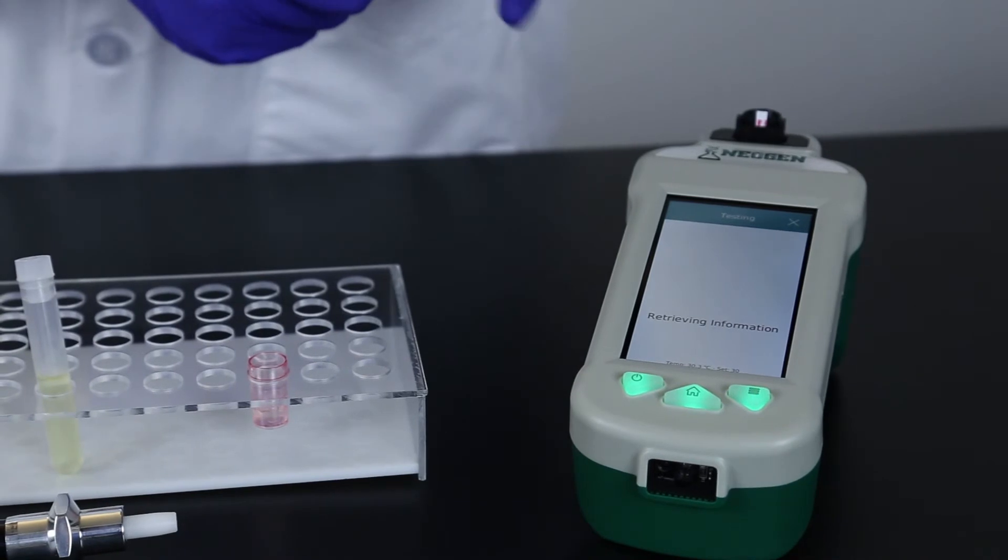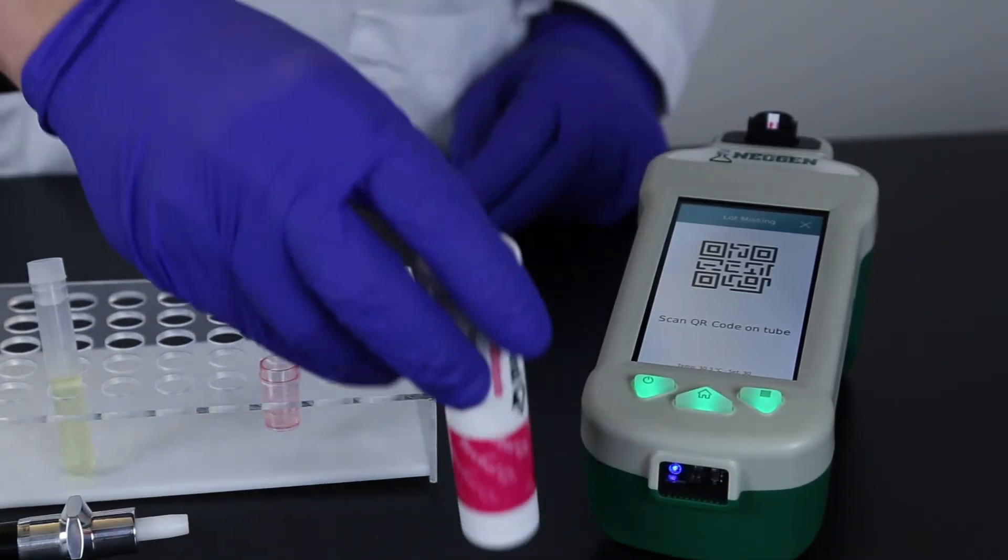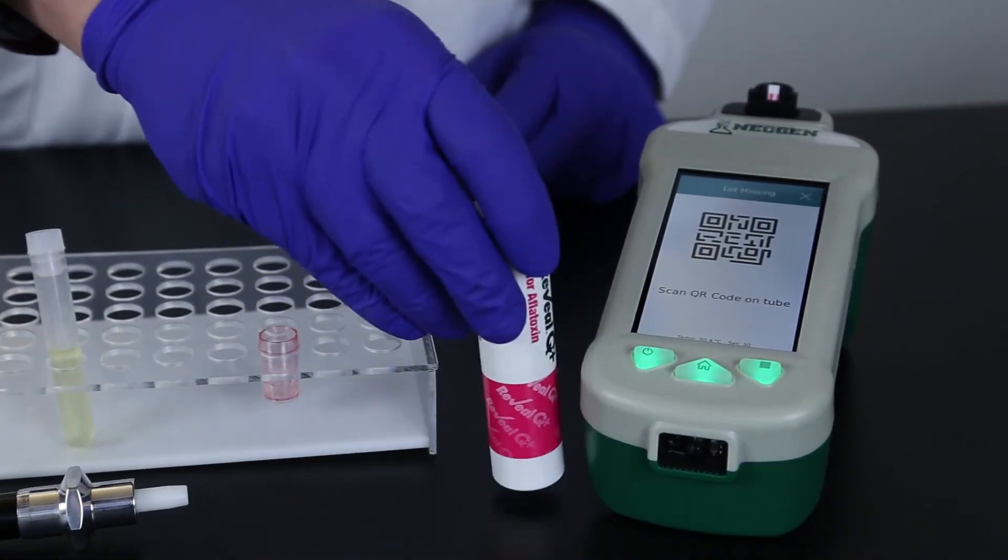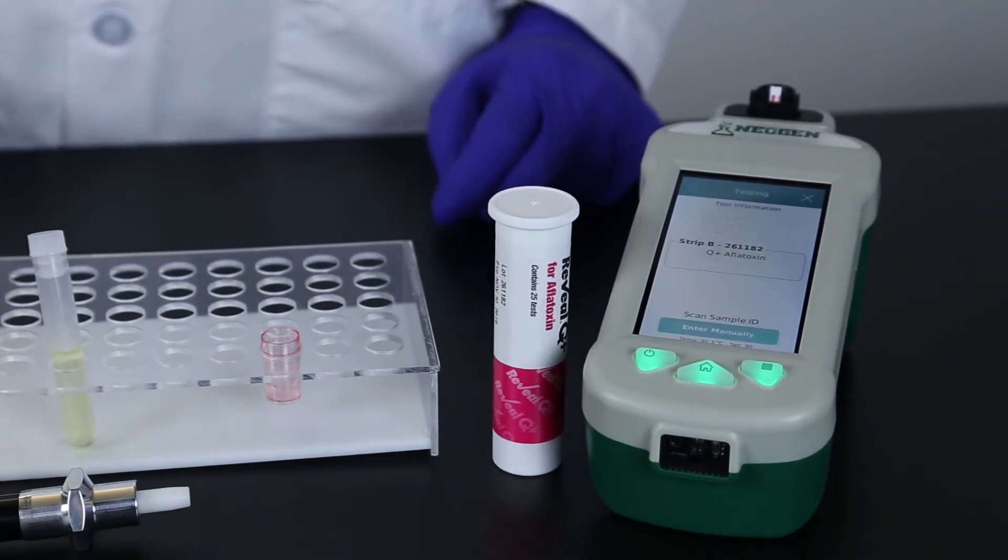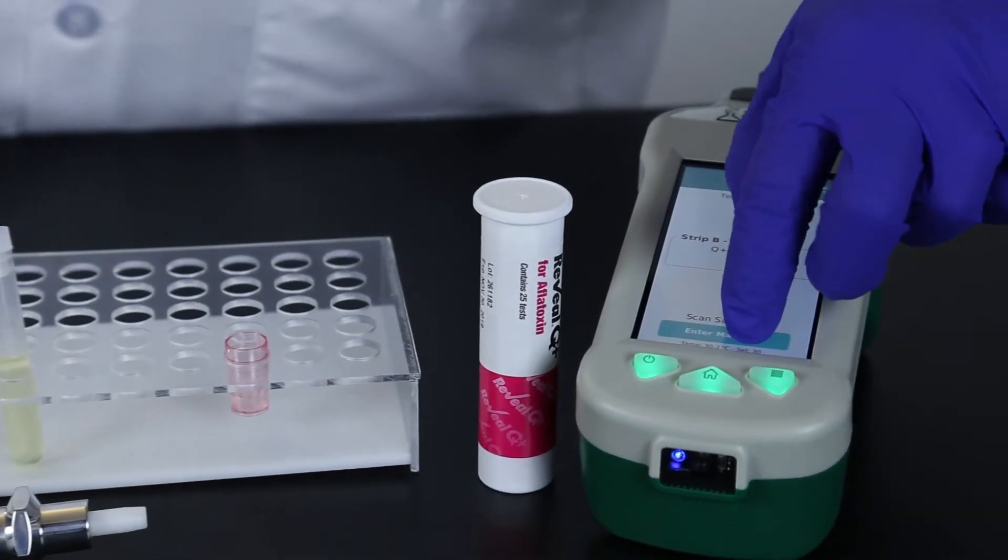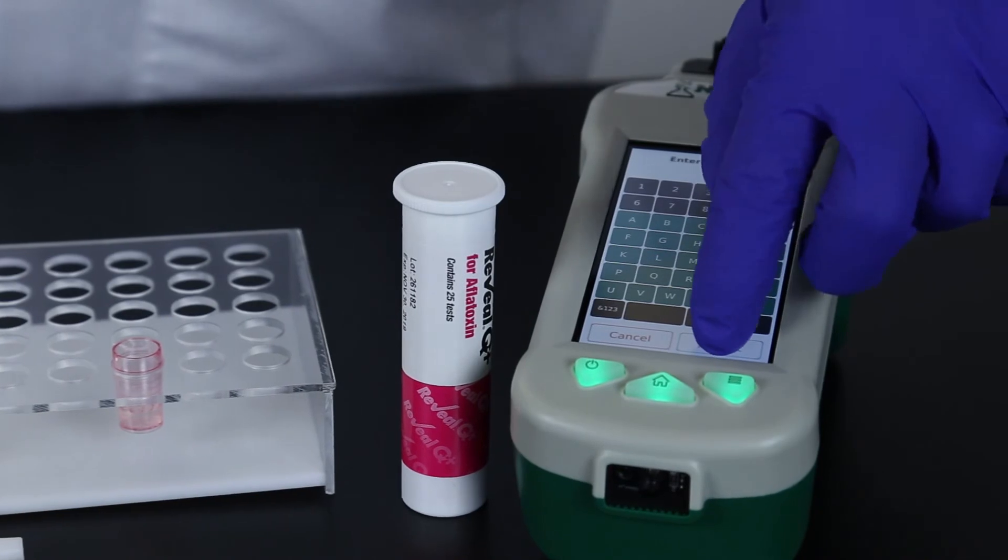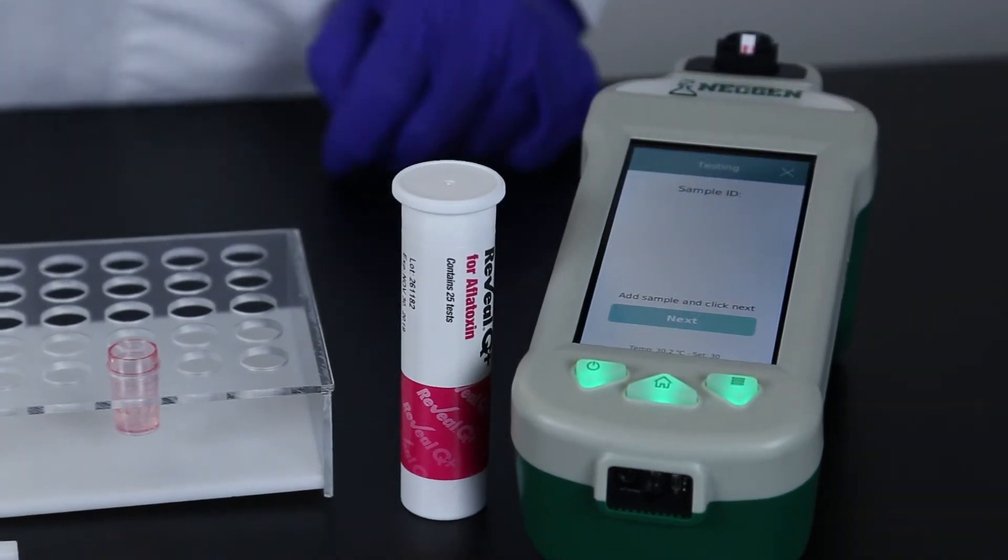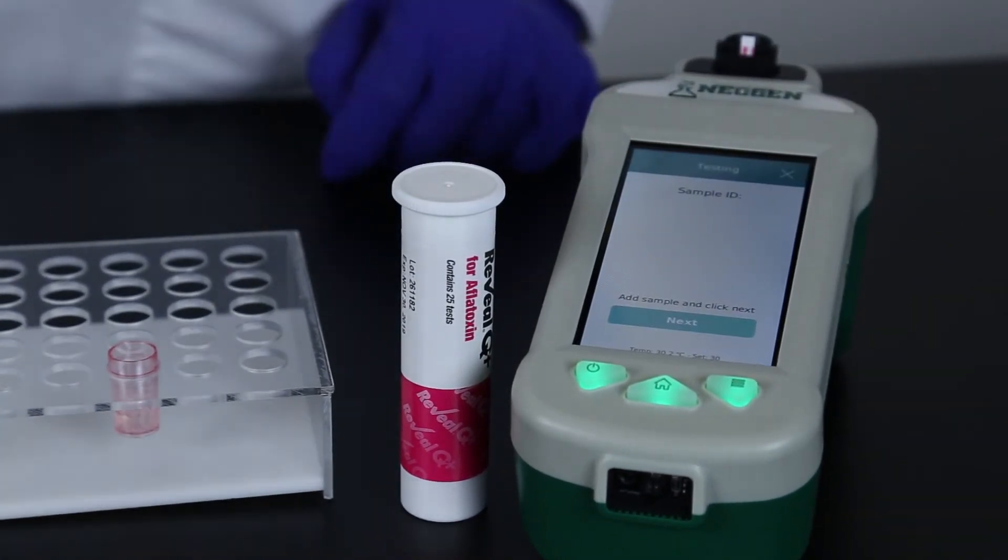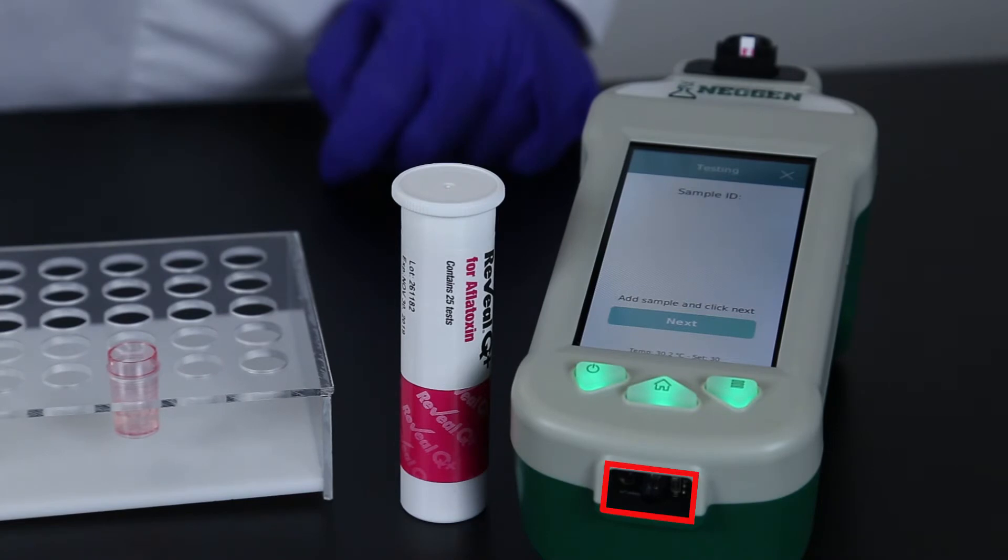If you need to add the lot information to the system, the scanner on the front of the system will turn on automatically. Scan the QR code located on the strip tube. Enter a sample ID if you like. This can be done manually or if you barcode your samples by using the scanner in front of the system.